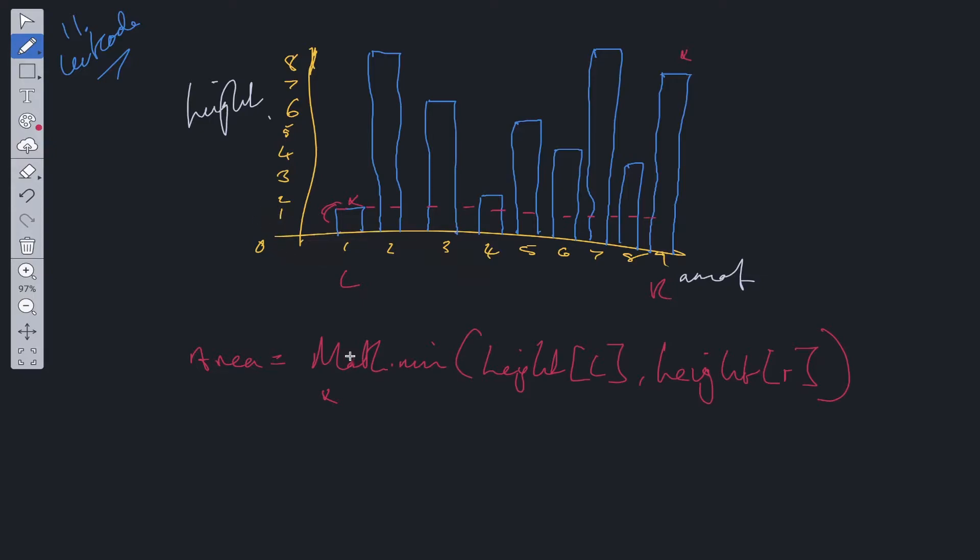We've worked out the height, and area is height times width. In order to work out the width, it's just the right minus the left, so it'll be 9 minus 1. So right minus left, and that works out the area.